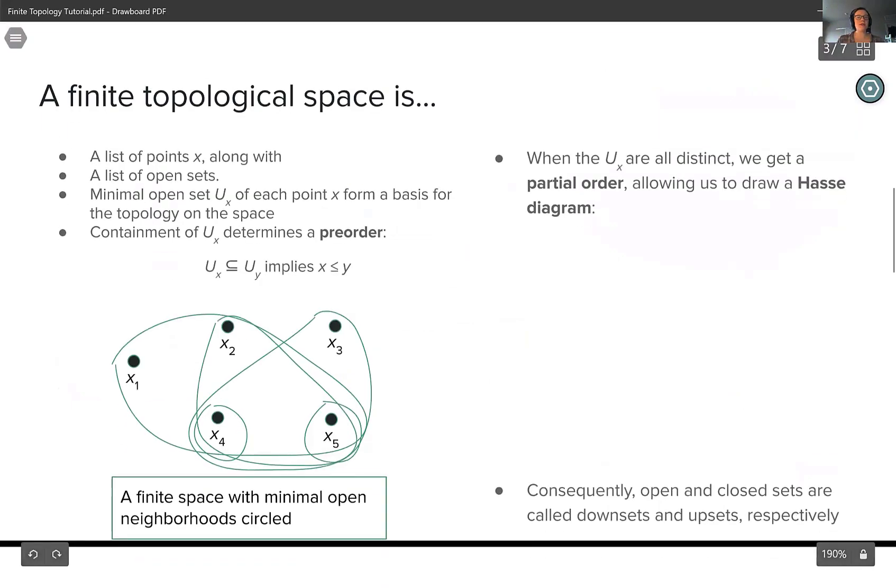So what is a finite topological space? Simply put, it's a finite set of points, along with a list of subsets of those points that are deemed open sets. Now we can generate all of these open sets using something called the minimal open set or minimal open neighborhood u sub x of each point x to form a basis for the topology on the space.